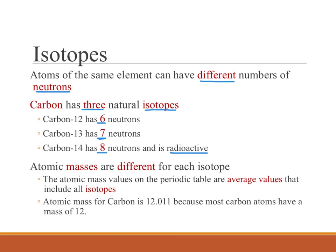It can be used by the body to do whatever carbon is needed for, to build one of those biological molecules, to be part of photosynthesis. They are all carbon, but they all have slightly different masses because they have different numbers of neutrons.